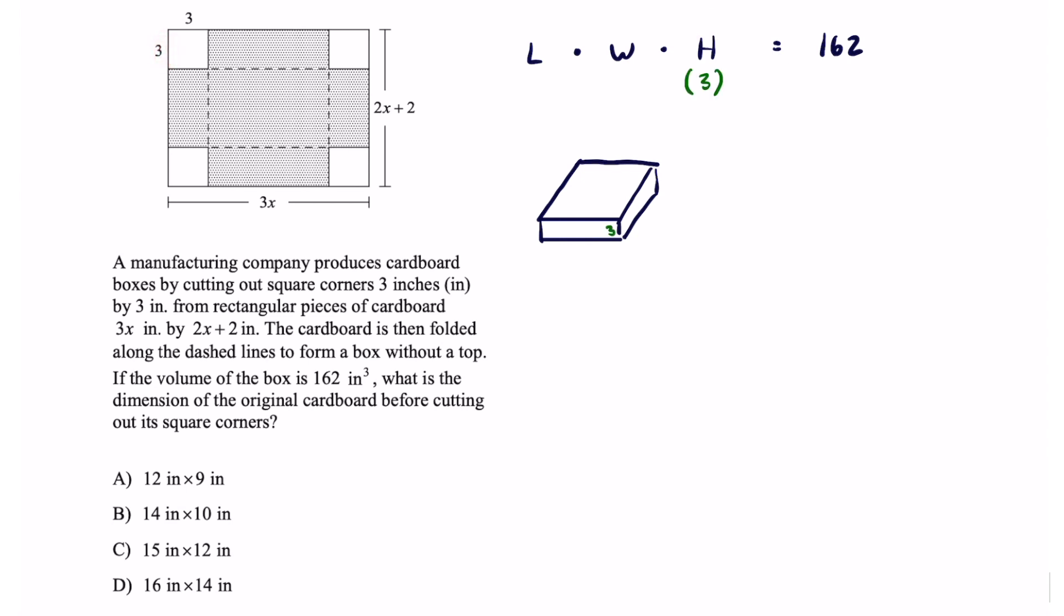Moving on to the length. The length of this is not 3x. That is not correct. That's because they're going to cut out three right here and three right here. So to represent the expression for my length I'm just going to take 3x minus 3 minus 3 or 3x minus 6.